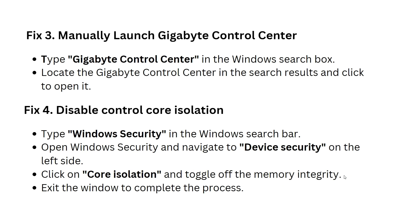There is also a solution to disable Core Isolation. Type 'Windows Security' in the Windows search bar, then open Windows Security and navigate to 'Device Security' on the left side. Click on 'Core Isolation' and toggle off the Memory Integrity option, then exit the window to complete the process.